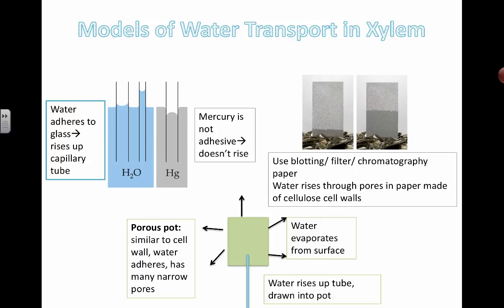Watson and Crick, for the discovery of the structure of DNA, built models to help them understand things. And so in this case, here are three examples of models to demonstrate how water is transported.